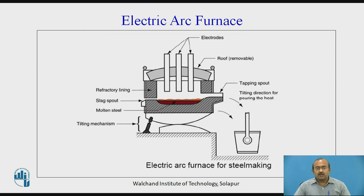The electrodes are supported or inserted through the roof, which is removable. The molten slag is present below which the molten steel is there. Refractory lining encloses the electric arc furnace. A tapping spout is used to take out the molten metal directly into the ladle. A tilting mechanism is shown for pouring the molten metal into the ladle.